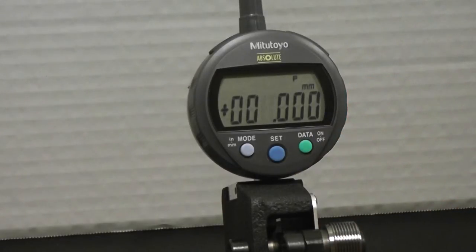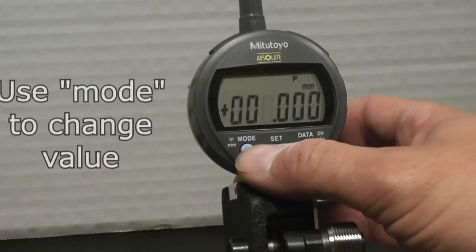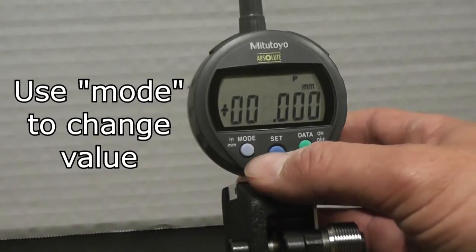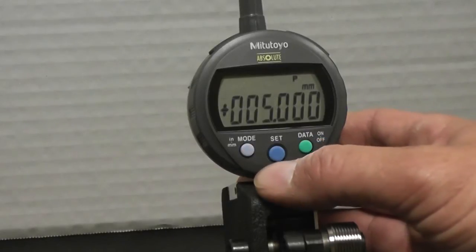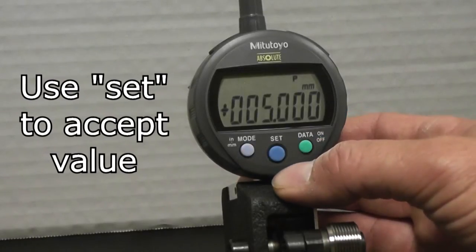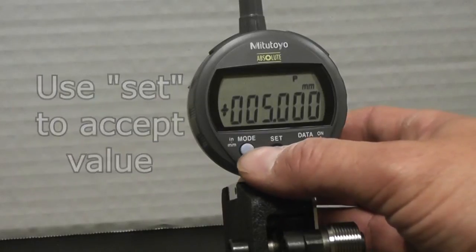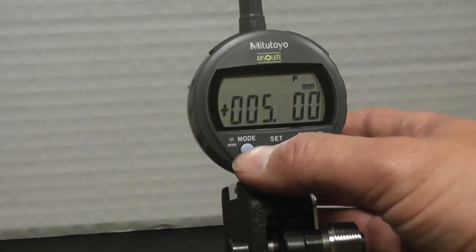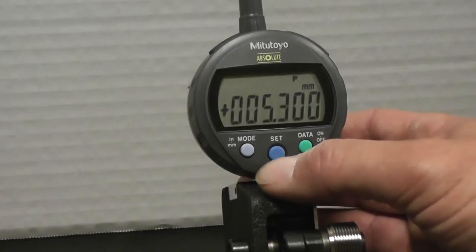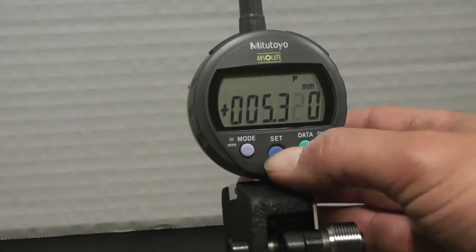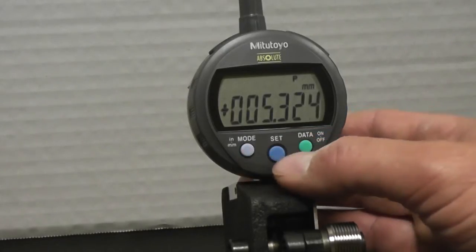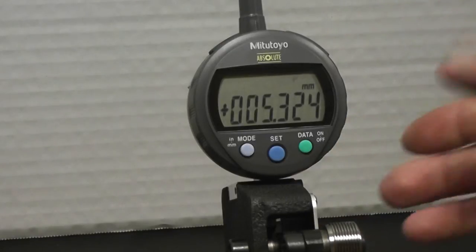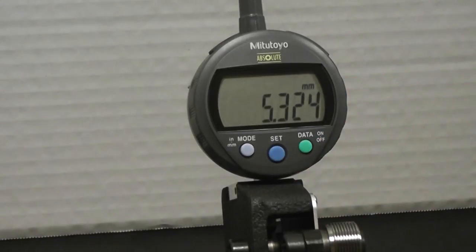We're measuring an M6 by 1 today, so our GO PD is 5.324. So we want to hit Mode. Every time you hit Mode, it's going to increase by a count of 1. So we want to go to 5, set that number. The next one is .324, so .3 set, .2 set, and .4 set. When you do that, the P is going to flash again. You just want to hit set one more time, and you're there.